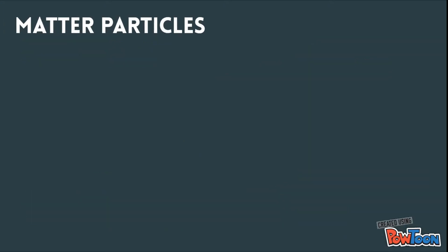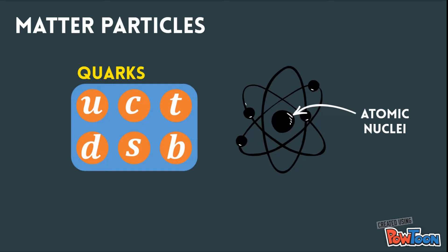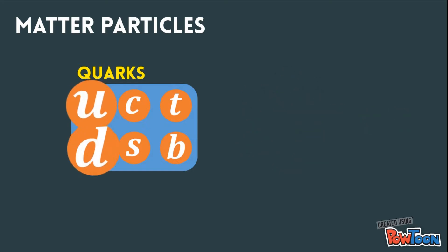Matter particles are the constituents of all the matter in our world. There are the quarks and the leptons. Quarks are the particles that compose atomic nuclei, and there are 6 of them: up, down, charm, strange, bottom and top.